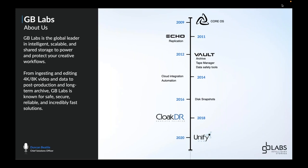GB Labs is creating some incredibly powerful and scalable storage solutions. The software inside those boxes has been developed over the years. In 2009 we launched CoreOS, our core operating system, and within that we had our initial Space system — an online, very fast NAS-based media storage system. At the time, many people were backing those up to other storage devices and the software they were using was quite inadequate. So we developed replication and introduced that into CoreOS, which allowed us to produce the products we know as Echo.